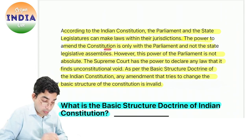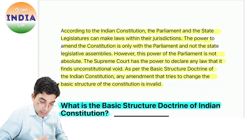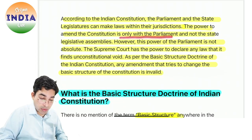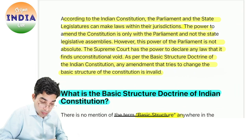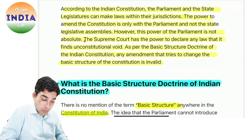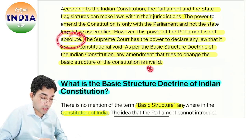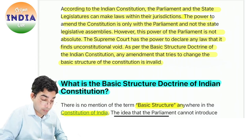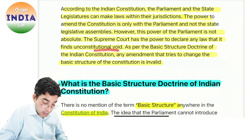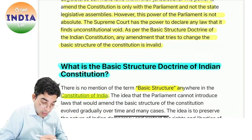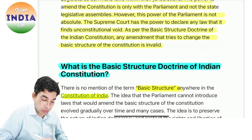The power to amend — according to the Indian constitution, Parliament or state legislature can make laws within their jurisdiction. The power to amend the constitution is only with the Parliament and not the state legislative assembly, meaning rajya sarkar amendment nahi kar sakti constitution mein, but wo apne kshetrachhetra ke andar kanoon bana sakti hai. However, this power of the Parliament is not absolute — Indian Parliament ke upar certain restrictions hain. Supreme Court has the power to declare any law that it finds unconstitutional void.